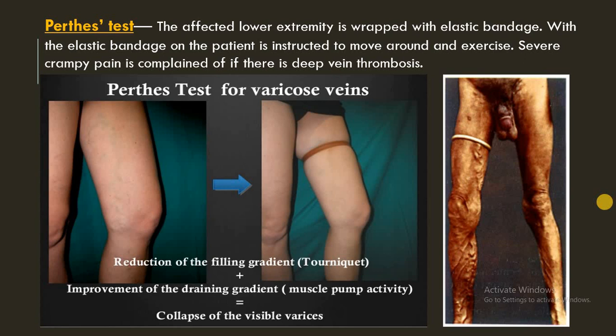Next is the Perthes test. The affected lower extremity is wrapped with an elastic bandage or tourniquet. The patient is then instructed to move around and exercise. If there is severe cramp or pain, it indicates that the deep vein is blocked.